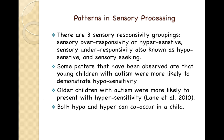There are three sensory responsivity groupings: sensory over-responsivity (hypersensitive), sensory under-responsivity (hyposensitive), and sensory seeking. Some patterns observed are that young children with autism were more likely to demonstrate hyposensitivity — these are the little ones who will be looking for input from wherever they can get it.